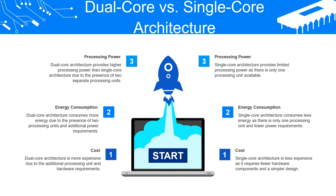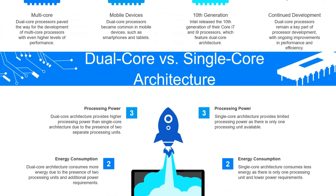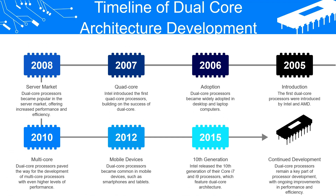Let's look at the timeline of dual core architecture development. In 2005, the first dual core processors were introduced by Intel and AMD. In 2006, dual core processors became widely adopted in desktop and laptop computers. Also in 2006, Intel introduced the first quad core processor, building on the success of dual core. By 2008, dual core processors became popular in the server market, offering increased performance and efficiency, and paved the way for multi-core processors with even higher levels of performance.